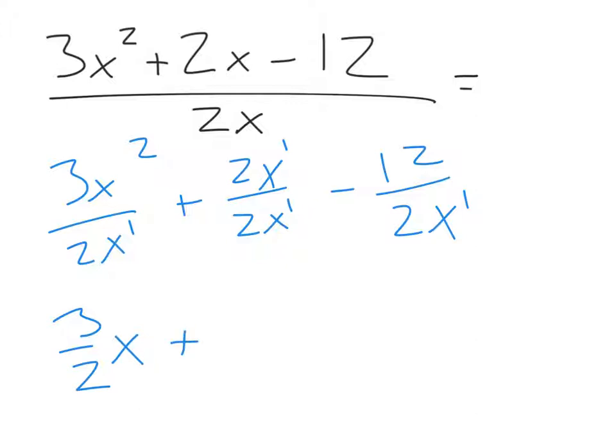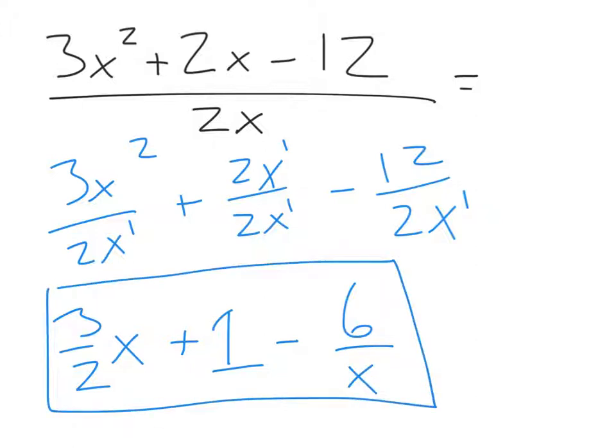Here, anything over itself is just one. So two x over two x gives us a plus one. And for this last one, we have a minus. Now, twelve over two is six. But notice, this x is in the denominator, and there are no x's in the numerator. So this x has to stay where it is. It has nothing to interact with. So even though twelve over two is six, that's a whole number, so it's going to go in the top. This x has to stay in the denominator. So this is actually our final answer, because there's nothing else we can combine in this problem.